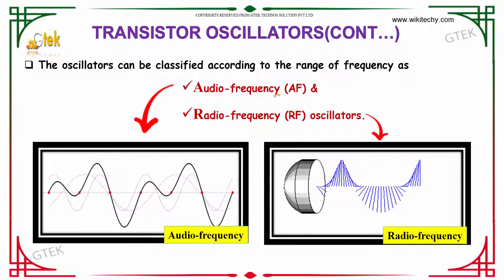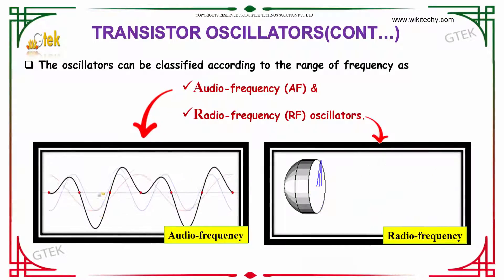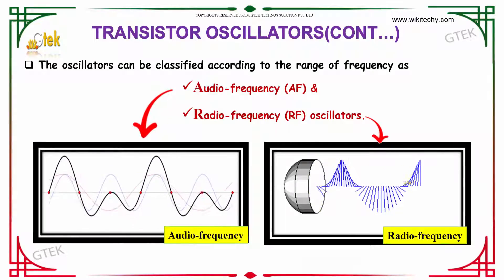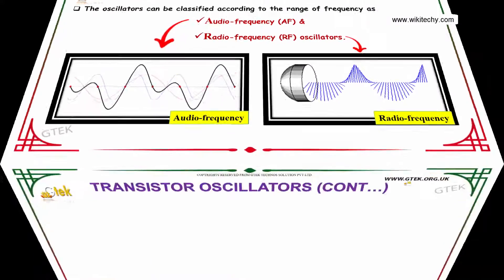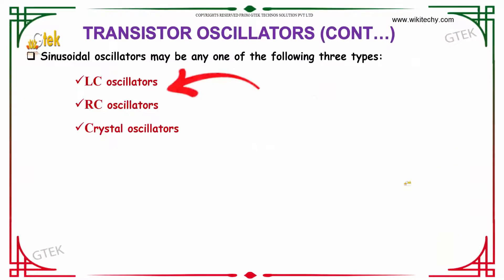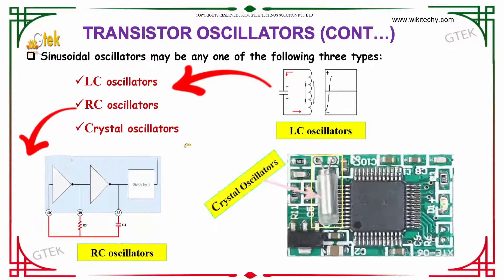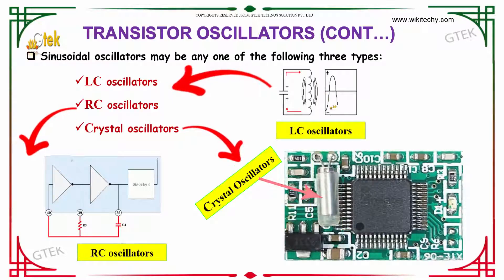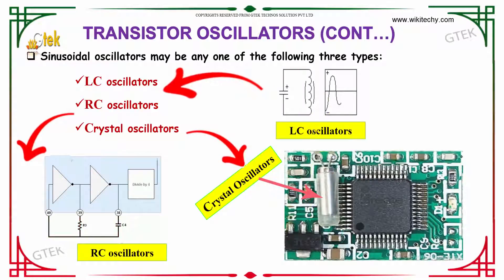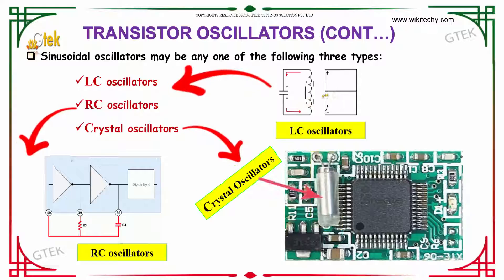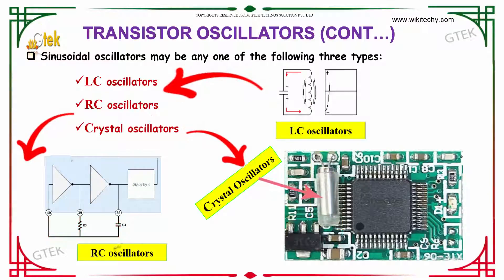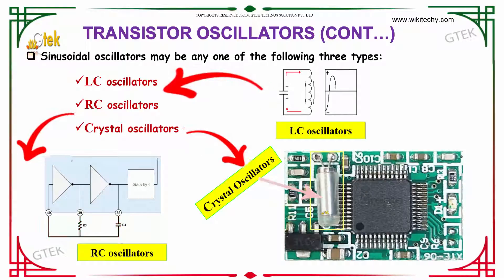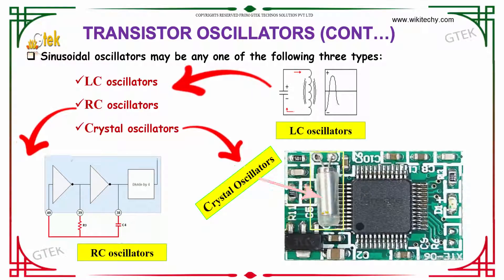Oscillators can also be classified according to the range of frequency into audio frequencies and radio frequencies. The oscillators may be any one of three types: LC oscillators (inductor-capacitor), RC oscillators (resistor-capacitor), and finally crystal oscillators.